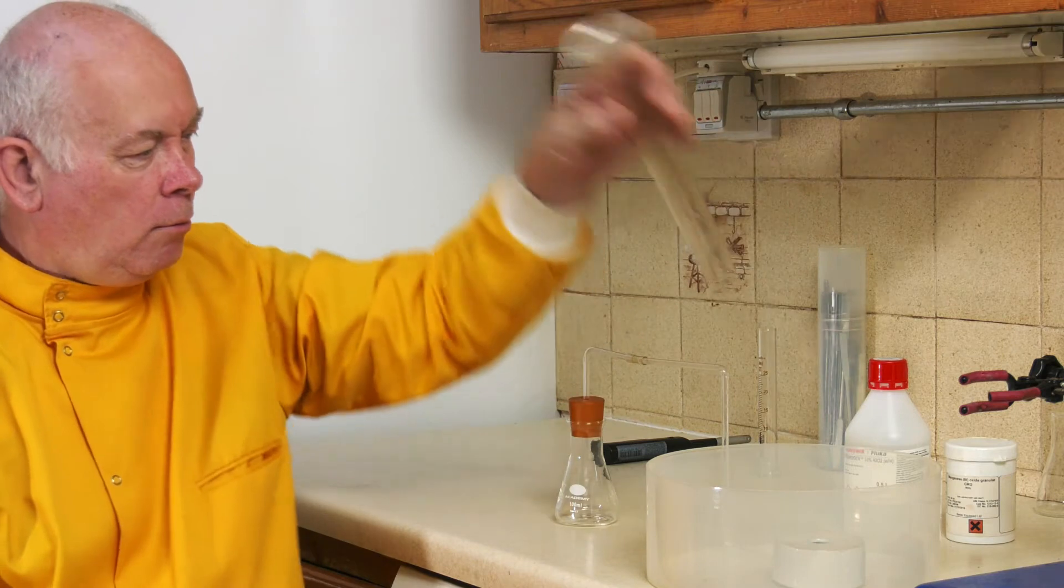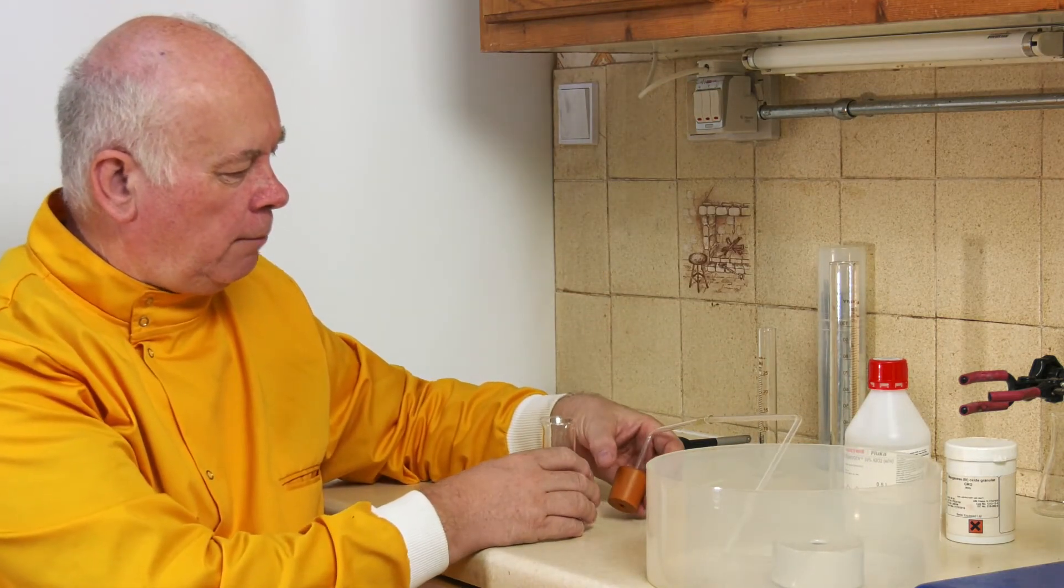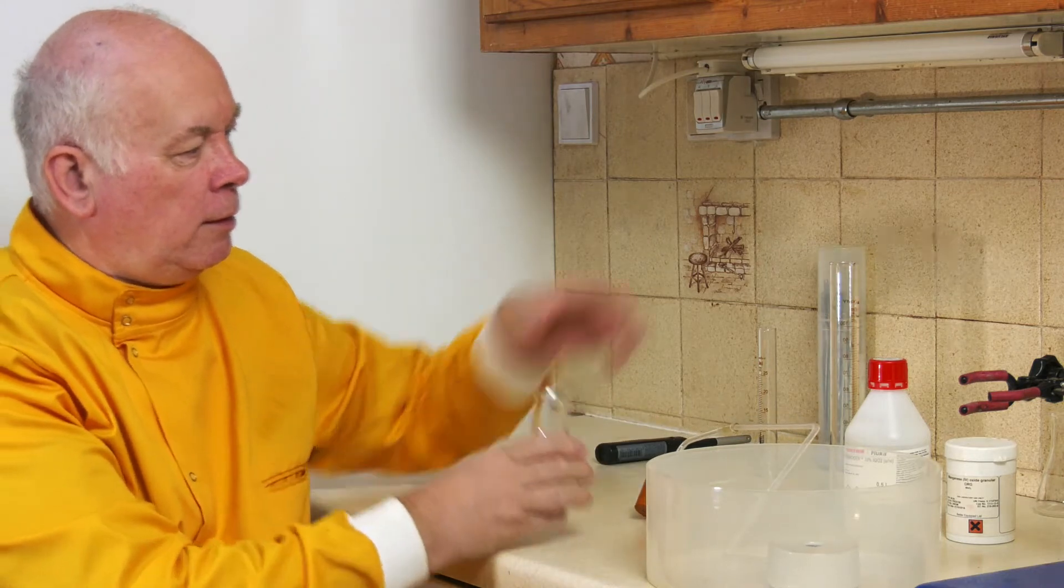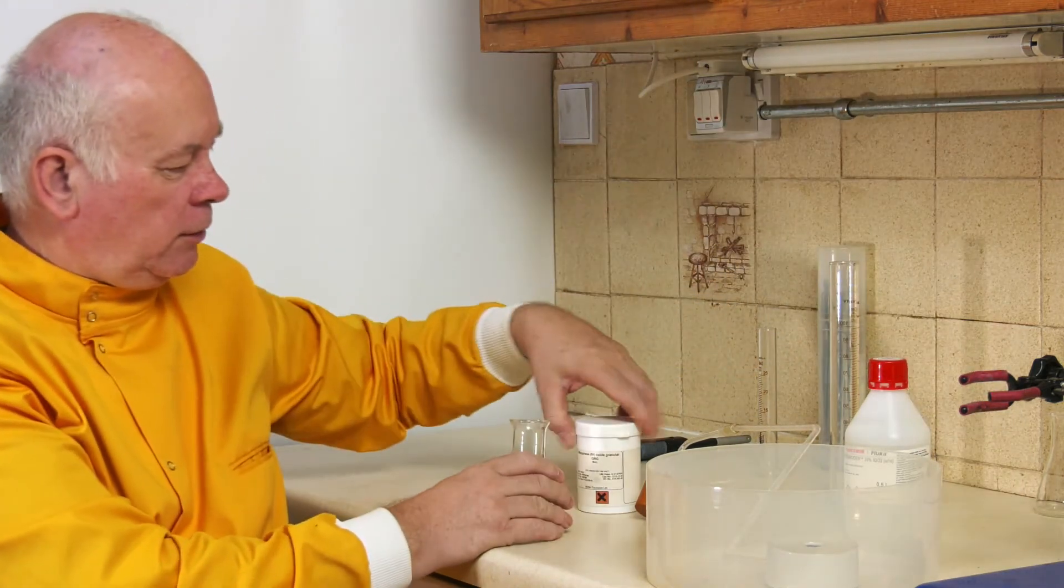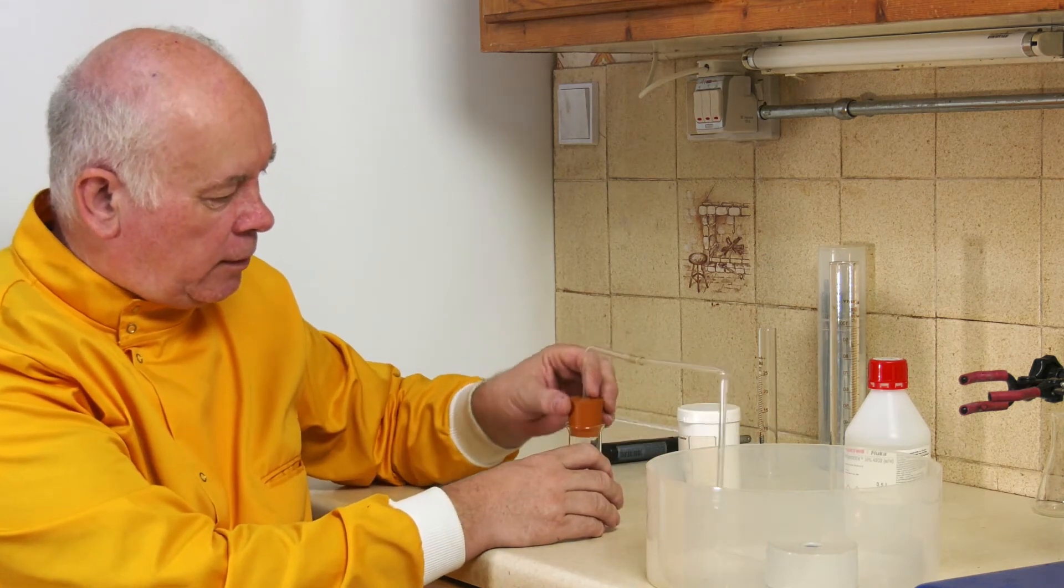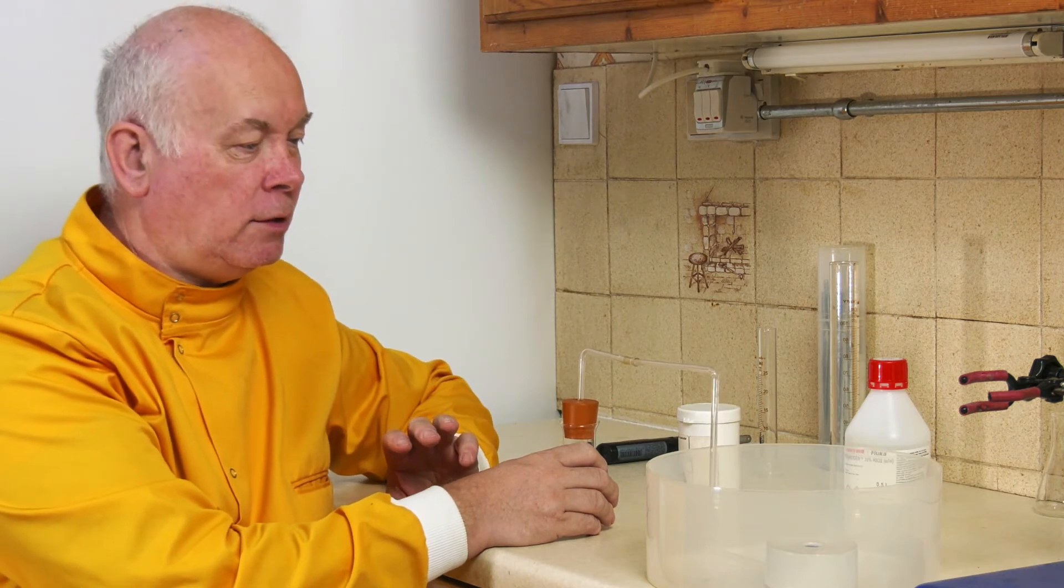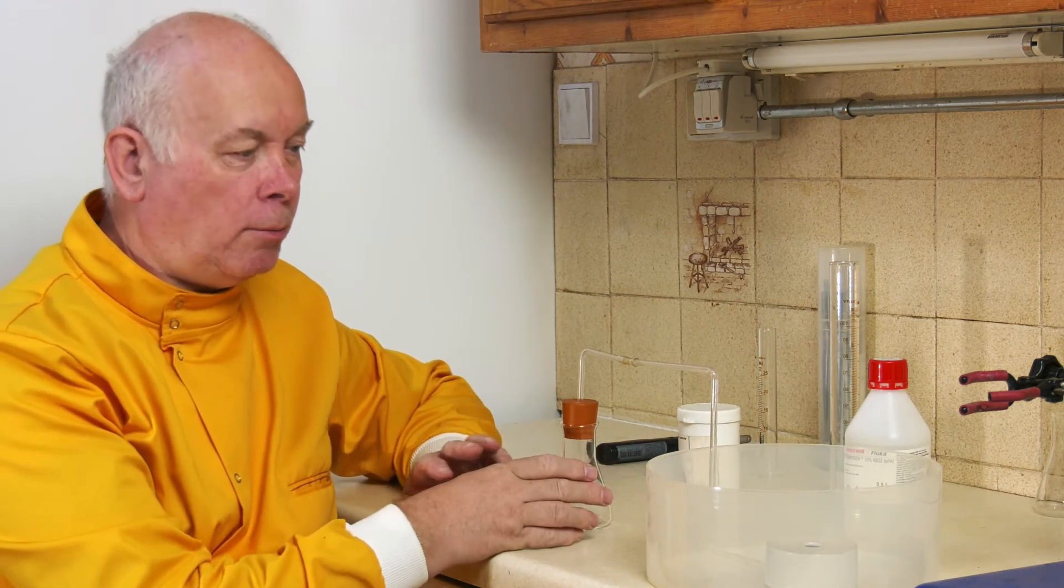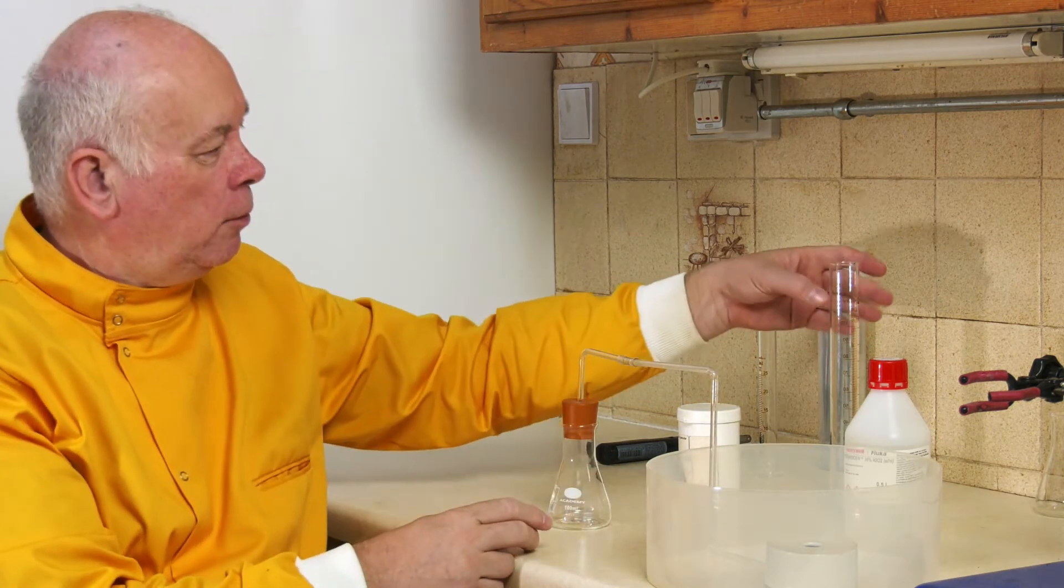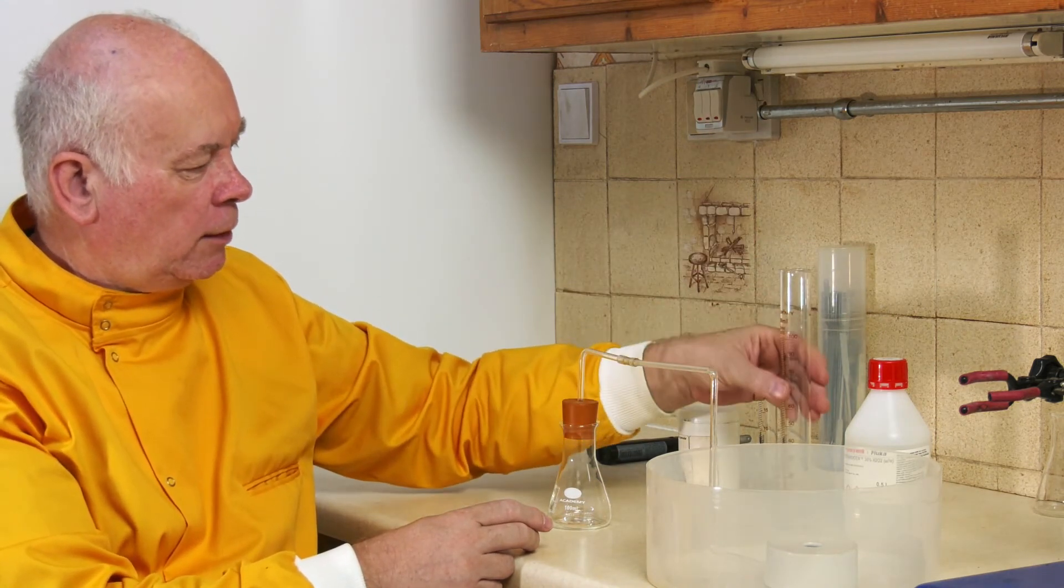And then when we're ready, what we'll do is put a small amount of the manganese dioxide catalyst in here, very quickly place this bung over the top making an airtight seal, we'll start the stopwatch, and we will measure the amount of oxygen collected every few seconds. Let's set it up now.